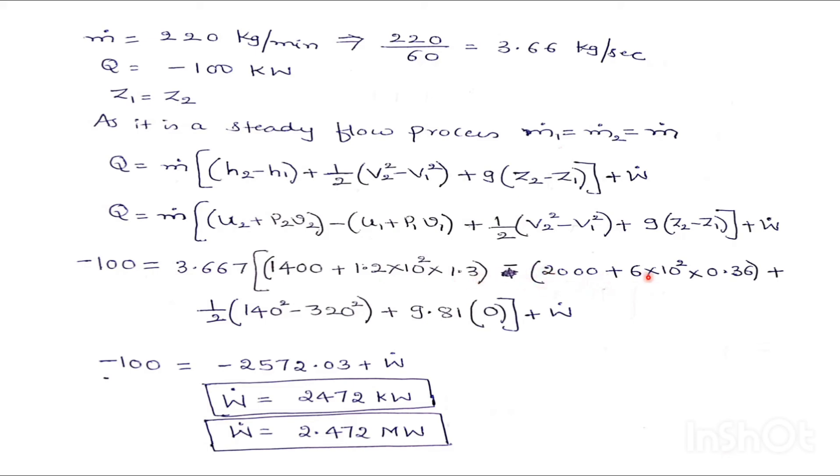So specific volume he has given minus U1 value. This also he has given 6 bar, so converted it in kilo Pascal into specific volume he has given plus 1 upon 2. V2 also he has given velocity. V1 also he has given plus 9.81. This term is 0.